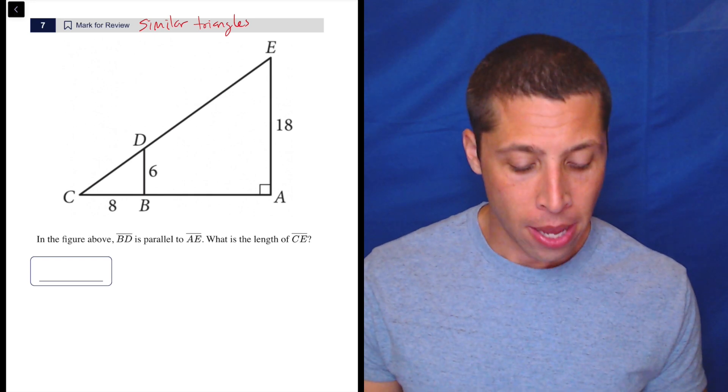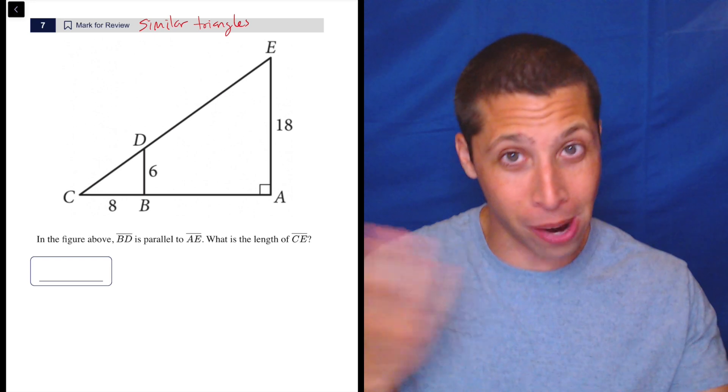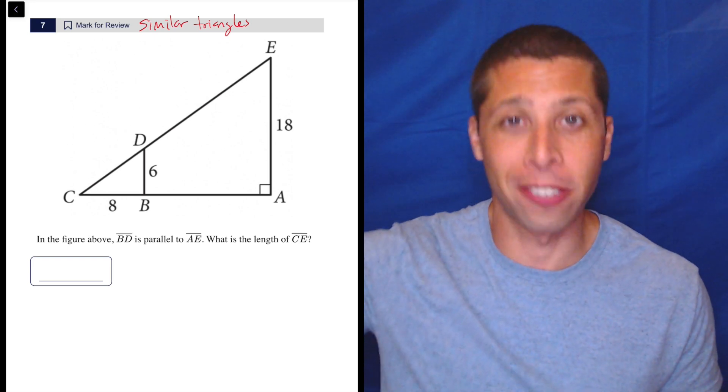So we're going to use ratios to compare them. There is a big triangle and a small triangle here. Hopefully you see them both. Otherwise, go to the geometry basics and start there.